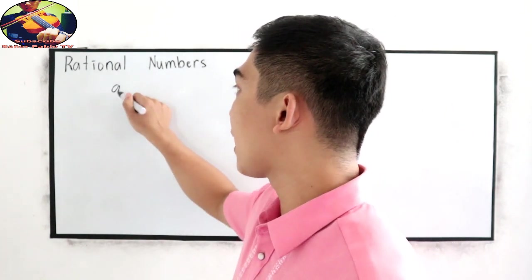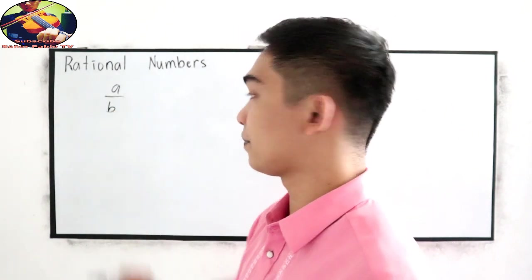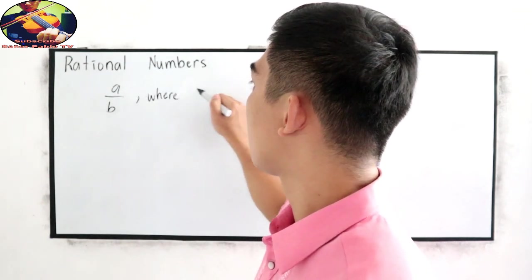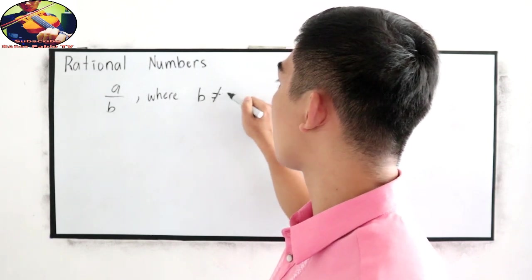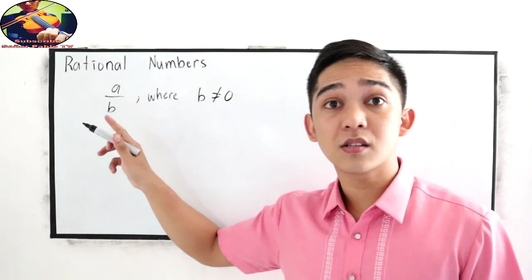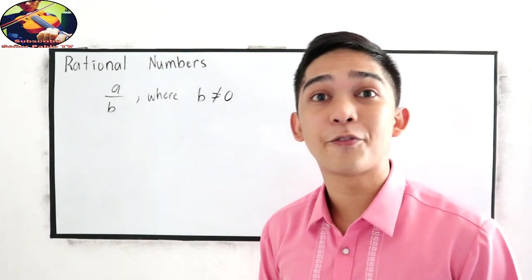The word rational is derived from the word ratio, which means quotient. The rational numbers are numbers which can be written as a quotient of two integers, such that A over B, wherein B must not be equal to zero. B is not equal to zero because if B is zero, that will give us undefined.